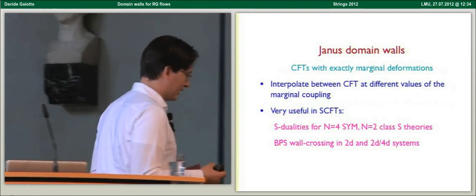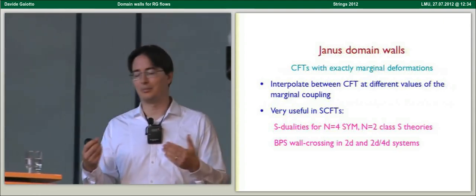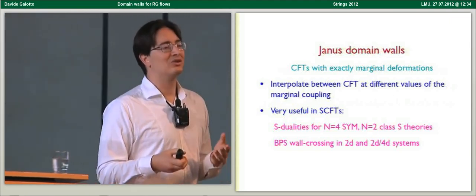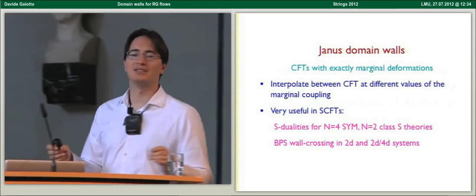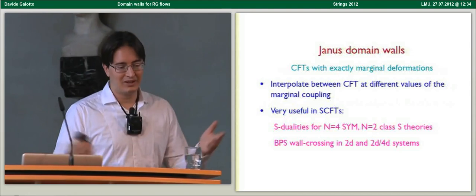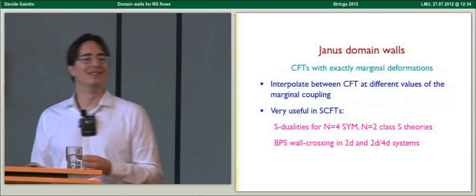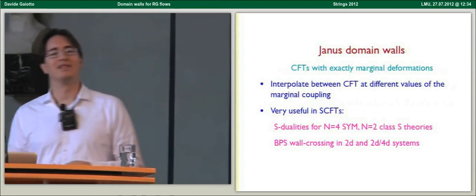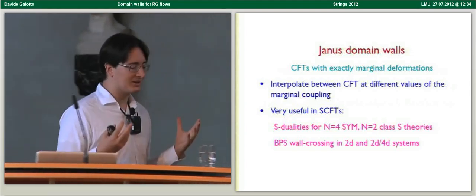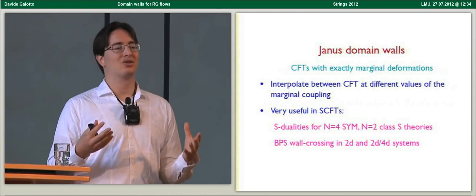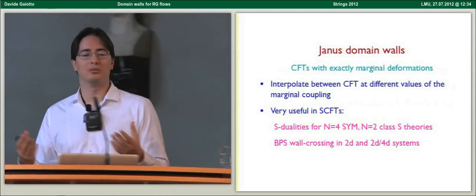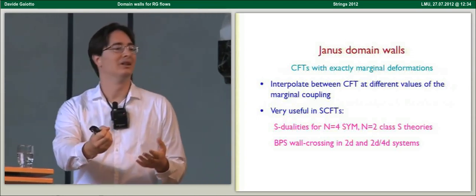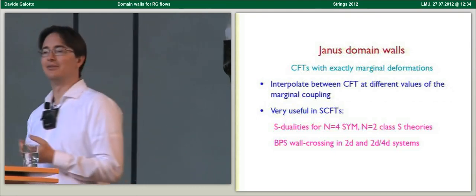There is another source of inspiration: a particular defect that is particularly interesting in supersymmetric conformal field theories — Janus domain walls. Janus domain walls interpolate between the same conformal field theory at different values of an exactly marginal coupling. They've occurred over and over in recent years, in studying things from the action of duality on boundary conditions of N=4 super Yang-Mills to the study of wall crossing of BPS states in Seiberg-Witten gauge theories. An interesting property they have is that they give a very concrete realization of the map of observables from the ultraviolet to the infrared.